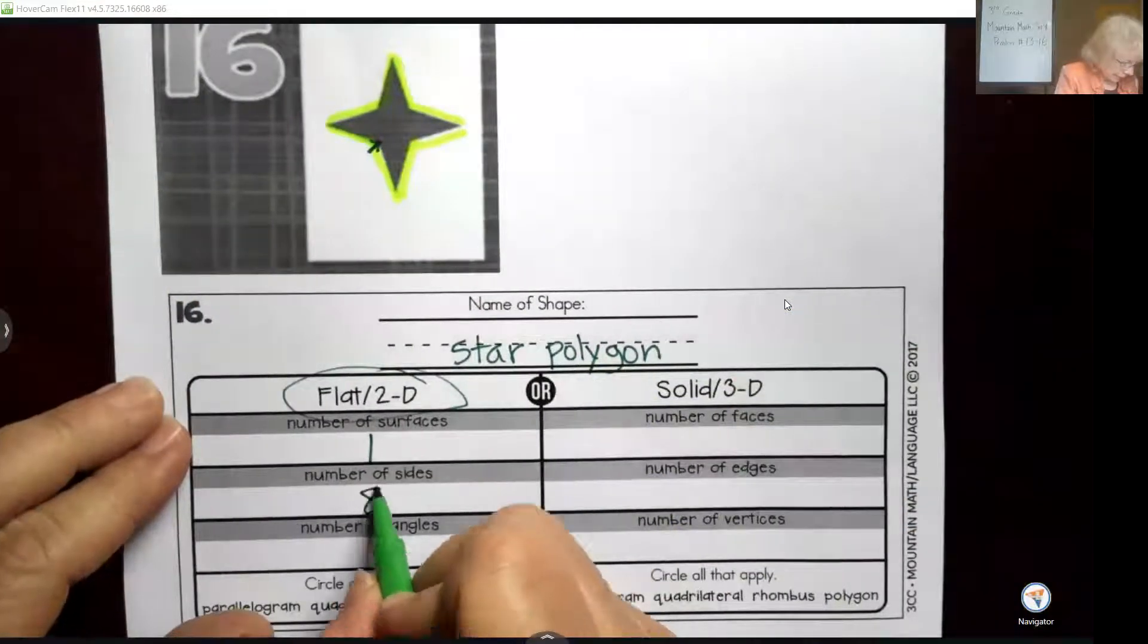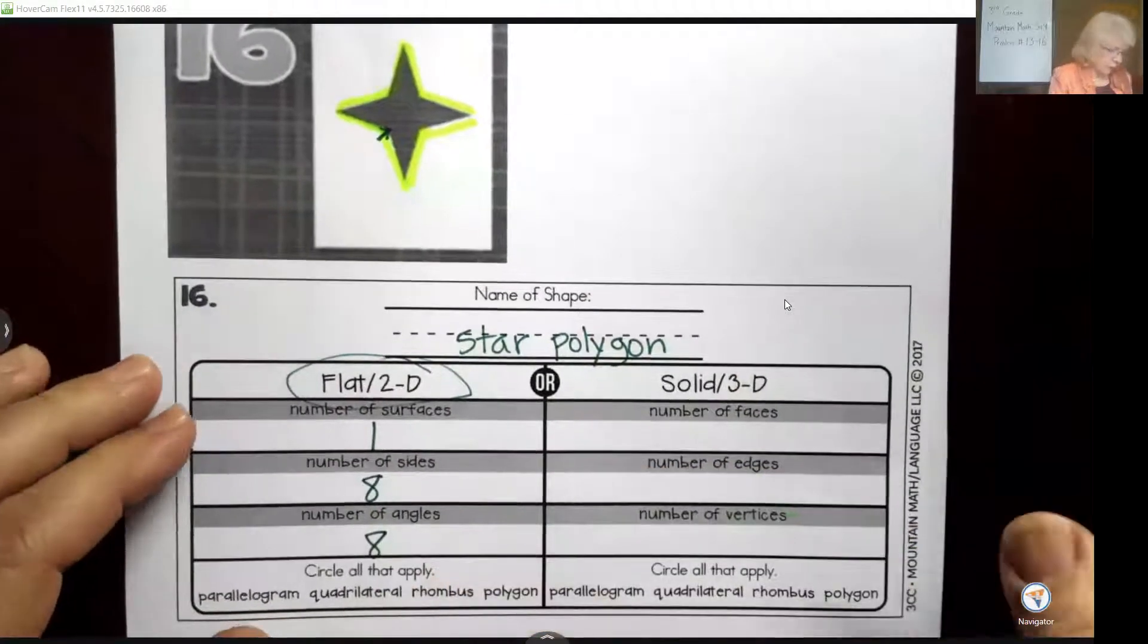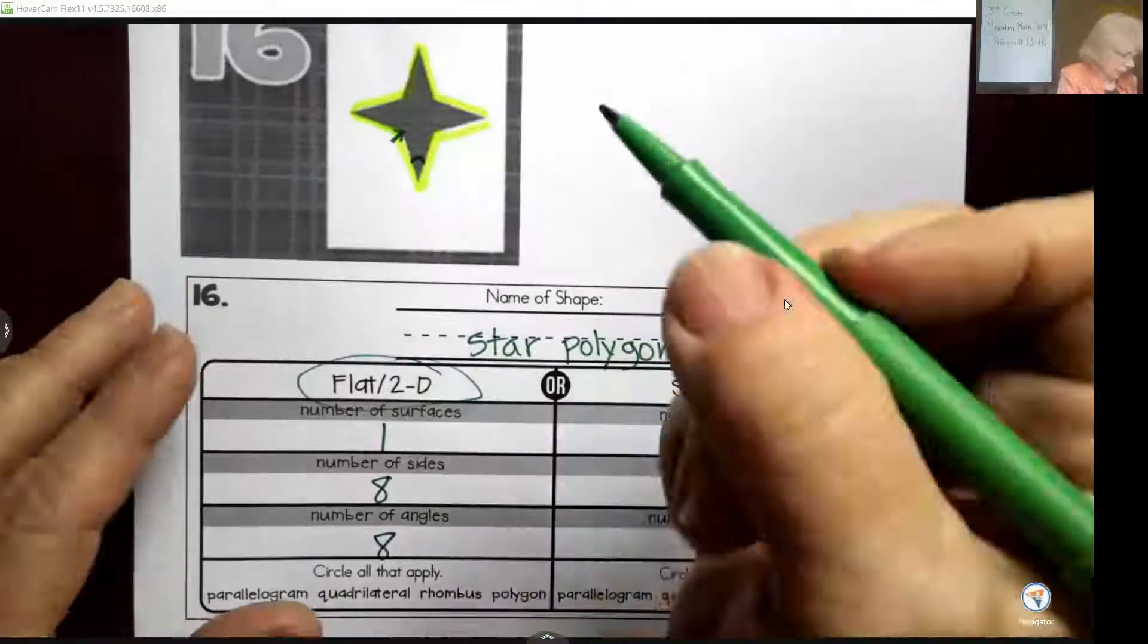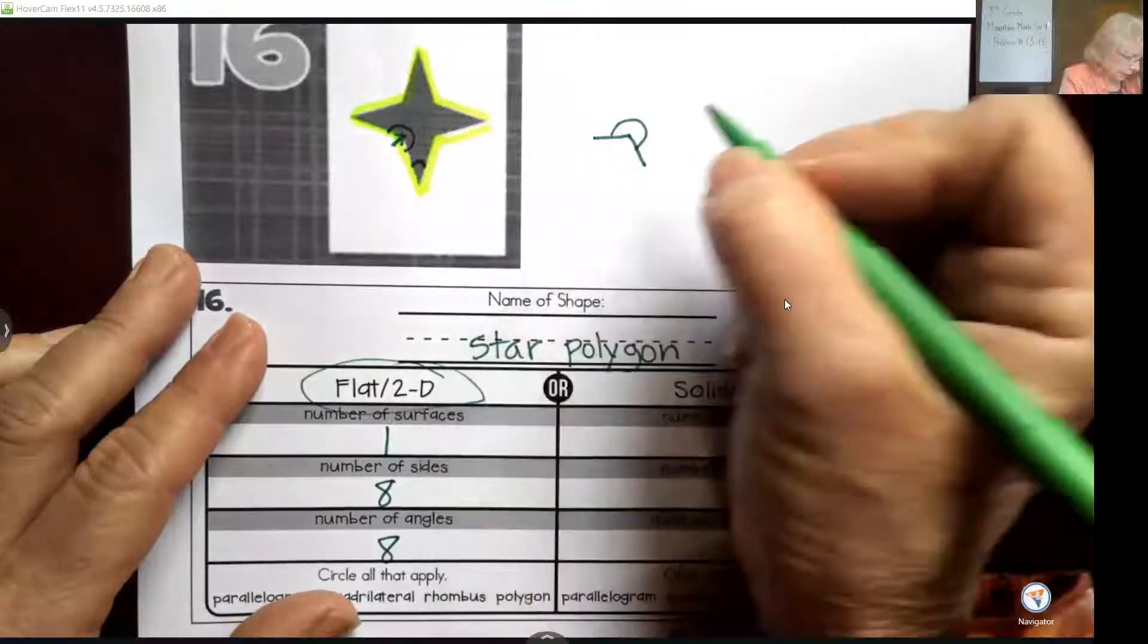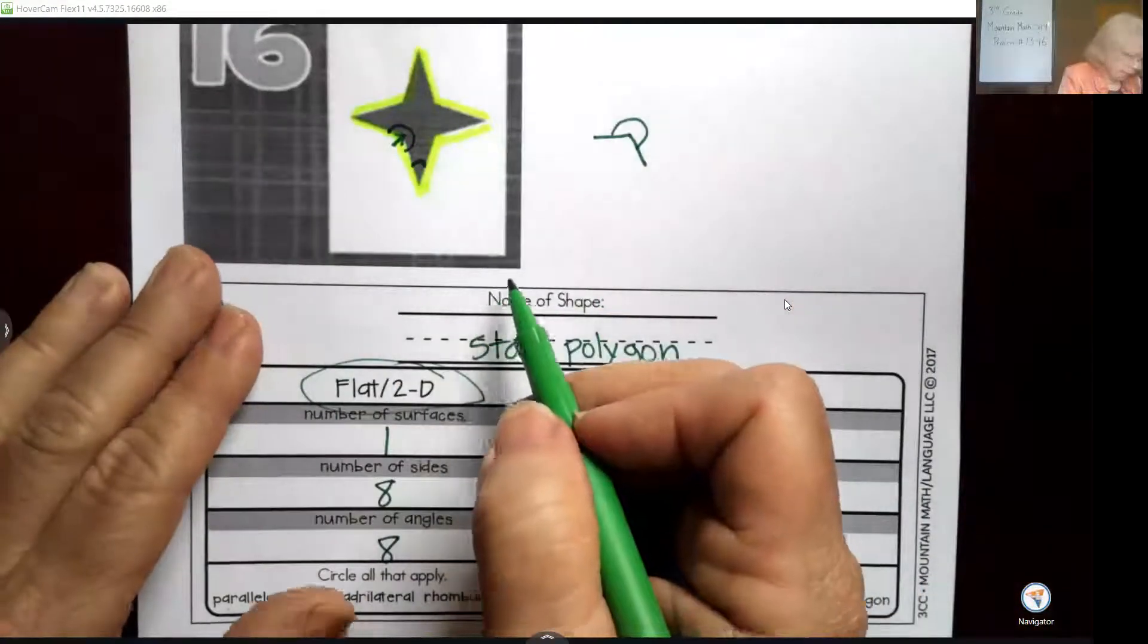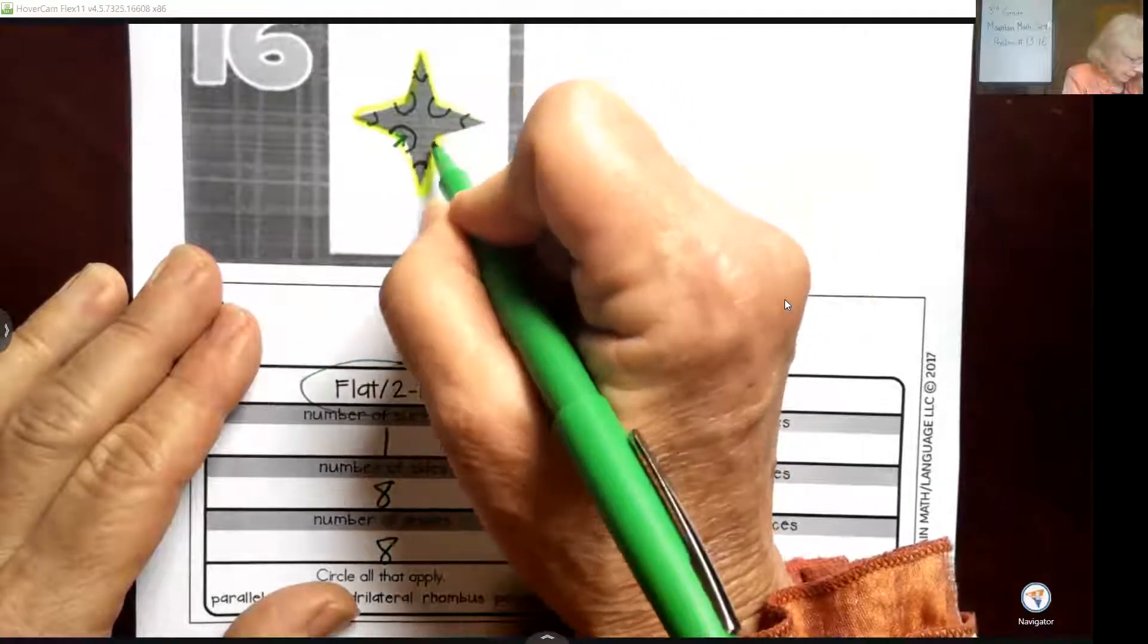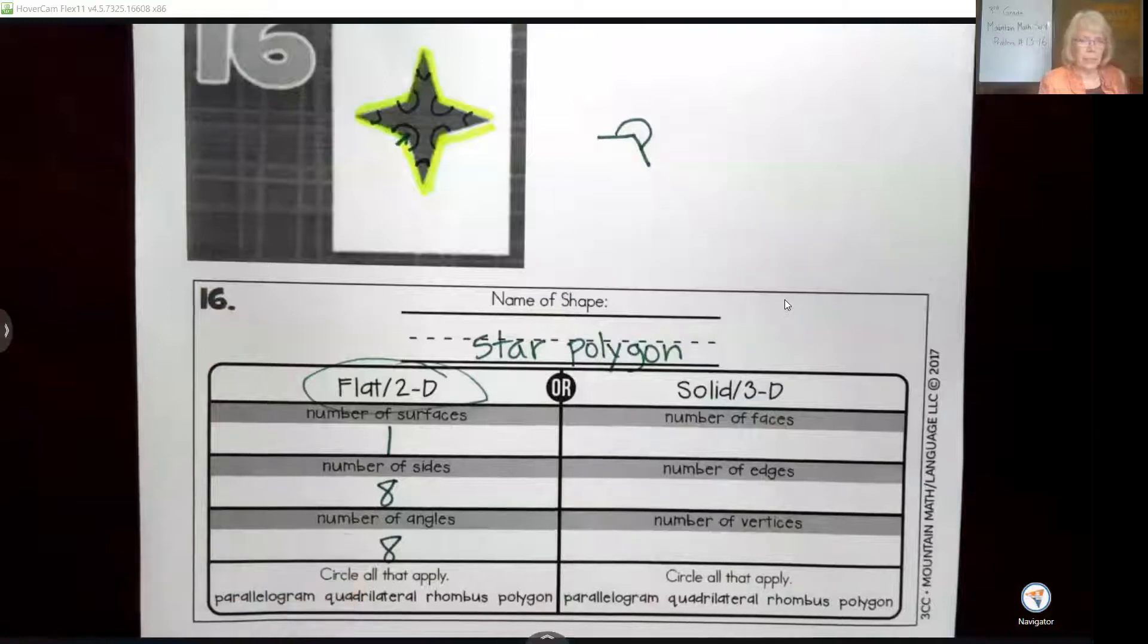I also have eight angles, and I'm going to show you what those are. Those are a little hard to see. I have this angle, which is called an acute angle—it's very narrow. Then this over here is actually another angle, an obtuse angle—it's very wide. So I have 1, 2, 3, 4, 5, 6, 7, 8 angles. That one is a little tricky.